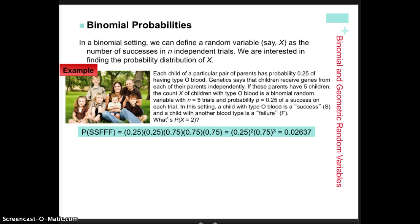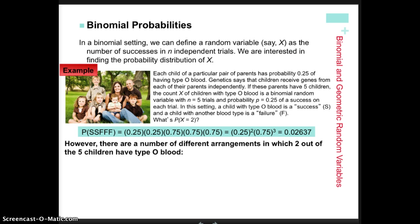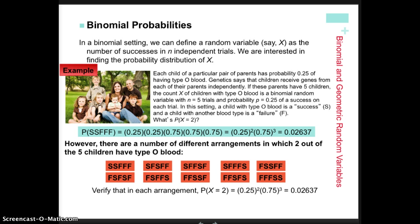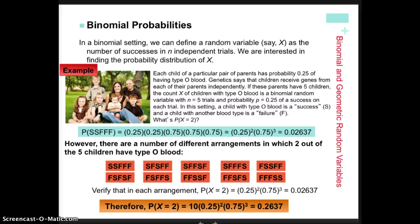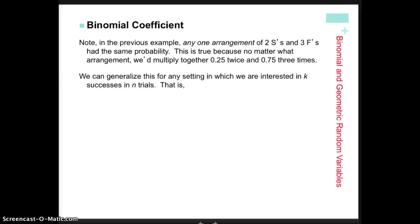That probability only accounts for one arrangement, but we know it can happen in many different ways. Counting them out, there are ten different ways that could happen. So when we calculate the probability of exactly two children having blood type O, we multiply the probability we already calculated by ten. That ten is called the binomial coefficient — the number of ways a particular combination of successes and failures can occur. It's essentially a count from a giant tree diagram.